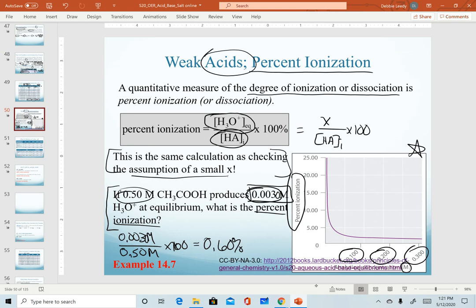And so what this graph is showing is that as we dilute, or we are lowering our concentration, adding water to it, we are in fact slowly increasing, until it becomes very dramatic, we are increasing our percent ionization.